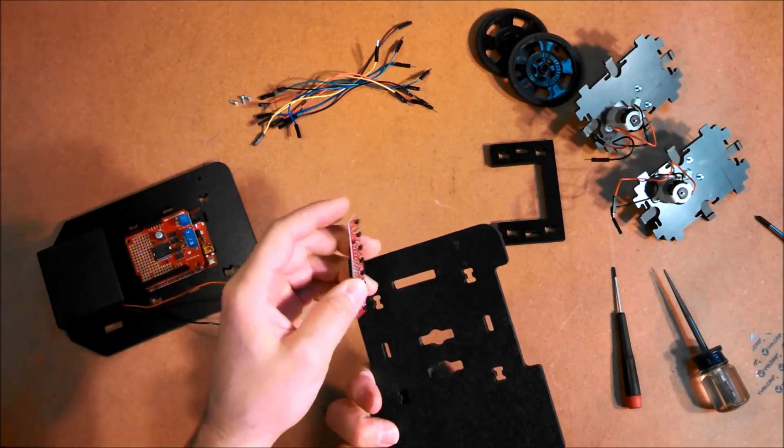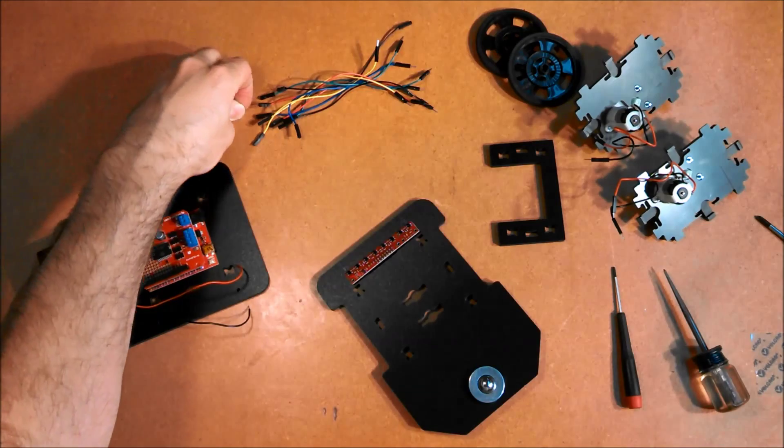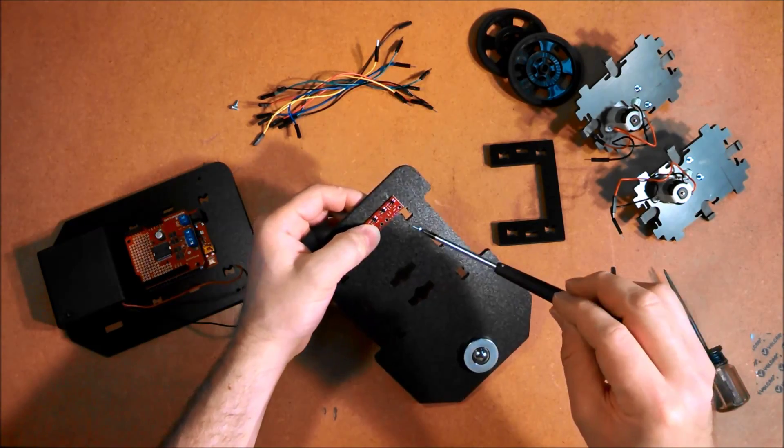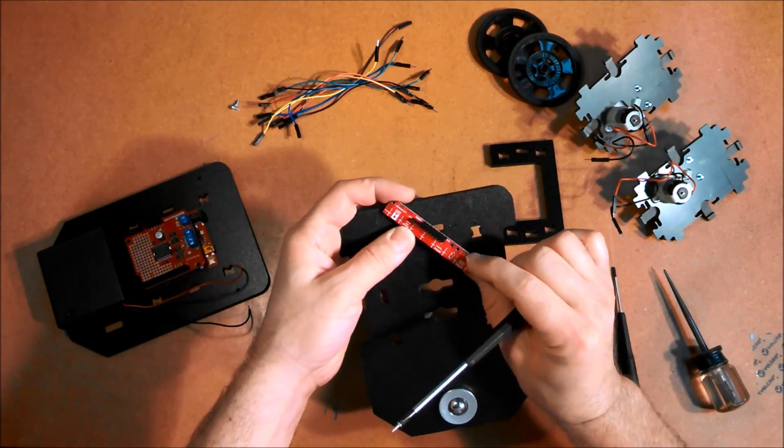Now I'll do the line sensor. It goes up front. Two screws is really probably enough for this. I'm just going to put in a third for good measure. And I've actually marked two before I screw this on. You can see which sensors are which.